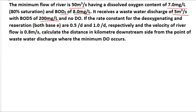The rate constant for deoxygenation and aeration both base E are 0.5 per day and 1.0 per day respectively, and the velocity of river flow is 0.8 meter per second. Calculate the distance in kilometer downstream from the point of wastewater discharge where the minimum DO occurs.